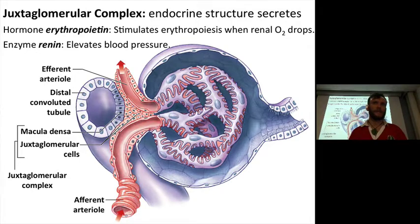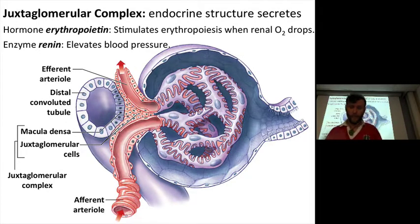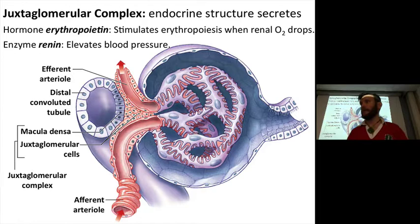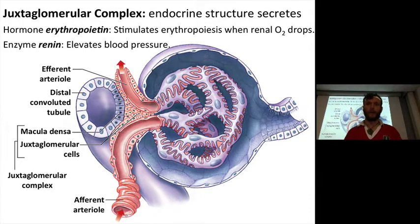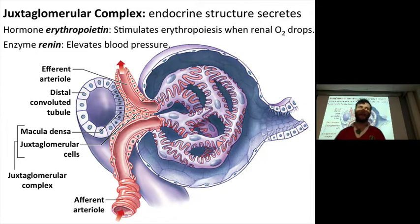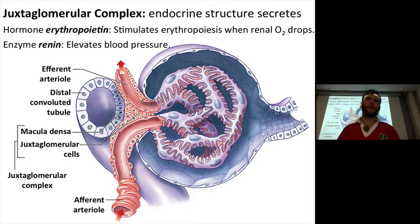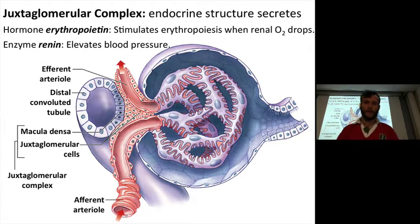What is erythropoiesis? The prefix erythro — you've heard that this semester with erythrocytes, which are red blood cells. So erythropoiesis is simply the production of red blood cells. Erythropoietin is the hormone that begins the process of red blood cell production. It's what helps your hematocrit to go up if it's low. So if you have a decreased renal O2 level, then you'll make more red blood cells.